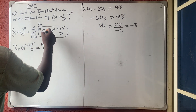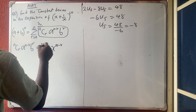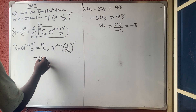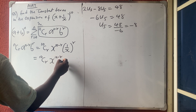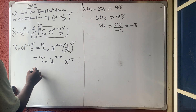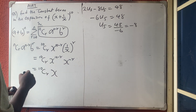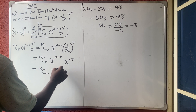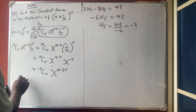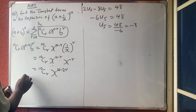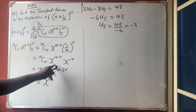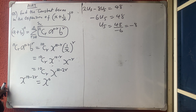Substituting: 10Cr times x^(10-r) times (1/x)^r. Rewriting (1/x)^r as x^(-r), this becomes 10Cr times x^(10-r-r) = 10Cr times x^(10-2r). For the constant term, the power of x must equal zero, so x^(10-2r) = x^0, meaning 10 minus 2r = 0.